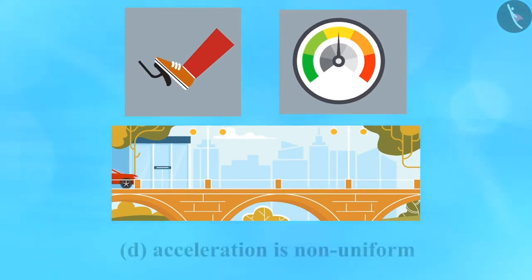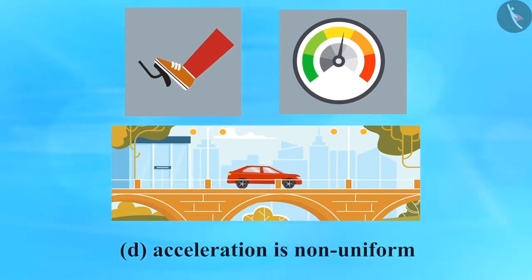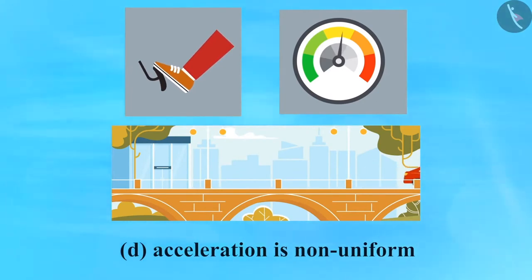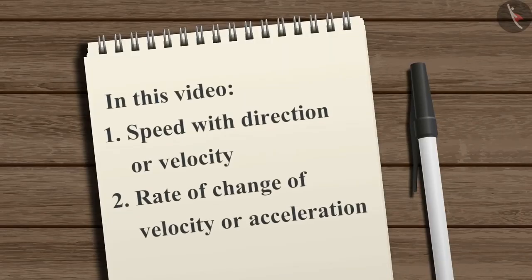D: Acceleration is non-uniform. The driver pushes and releases the accelerator pedal repetitively for different time intervals, which gives the car jerks along with the increase in speed. So, in this video, we learned about speed with direction or velocity, and the rate of change of velocity or acceleration. We'll see you soon.